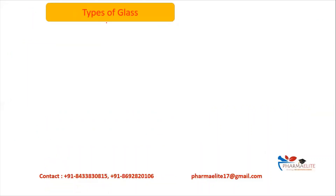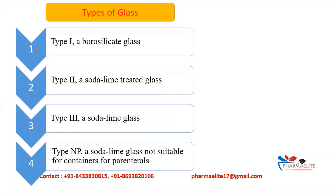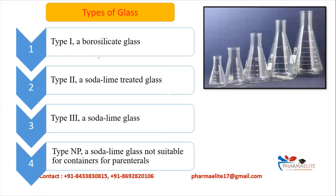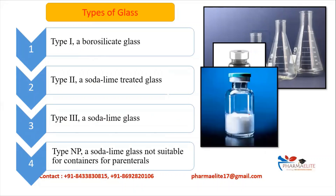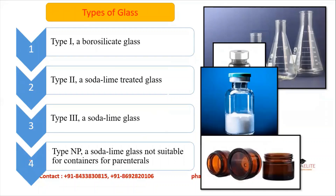Now we are going to study the types of glass. Type 1 is borosilicate glass. Type 2 is soda lime treated glass — a modified version of Type 3 — used as vials for parenteral preparations. Type 3 is soda lime glass, used as vials but only for solid preparations, not aqueous ones. Type NP is a non-parenteral soda lime glass, used for ointments and creams.